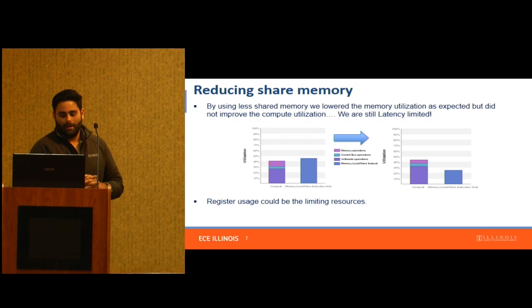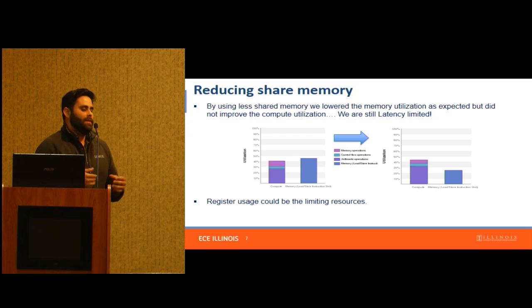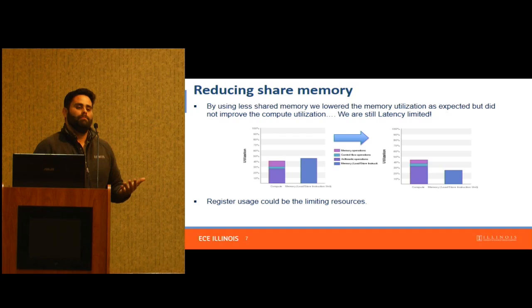We did that, and this is basically what we got out of the profiler. You can immediately tell this is not great — not what we wanted. We got some improvement: we went from 40% to slightly above 40%, and the memory utilization went down because we started using less shared memory.